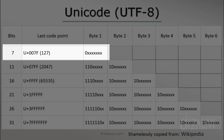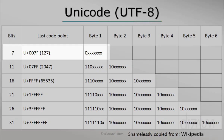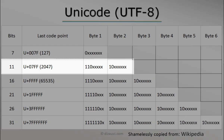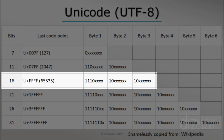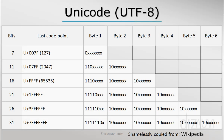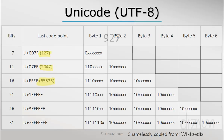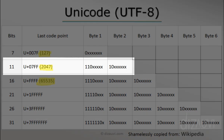For one byte, the code point ranges from 0 to 127, covering all basic ASCII characters. For code points 128 to 2047, two bytes are used, and so on. Let's try to encode code point 927 into a UTF-8 binary sequence. The first step is determining how many bytes are required: since 927 is greater than 127 and less than 2047, we use two bytes.